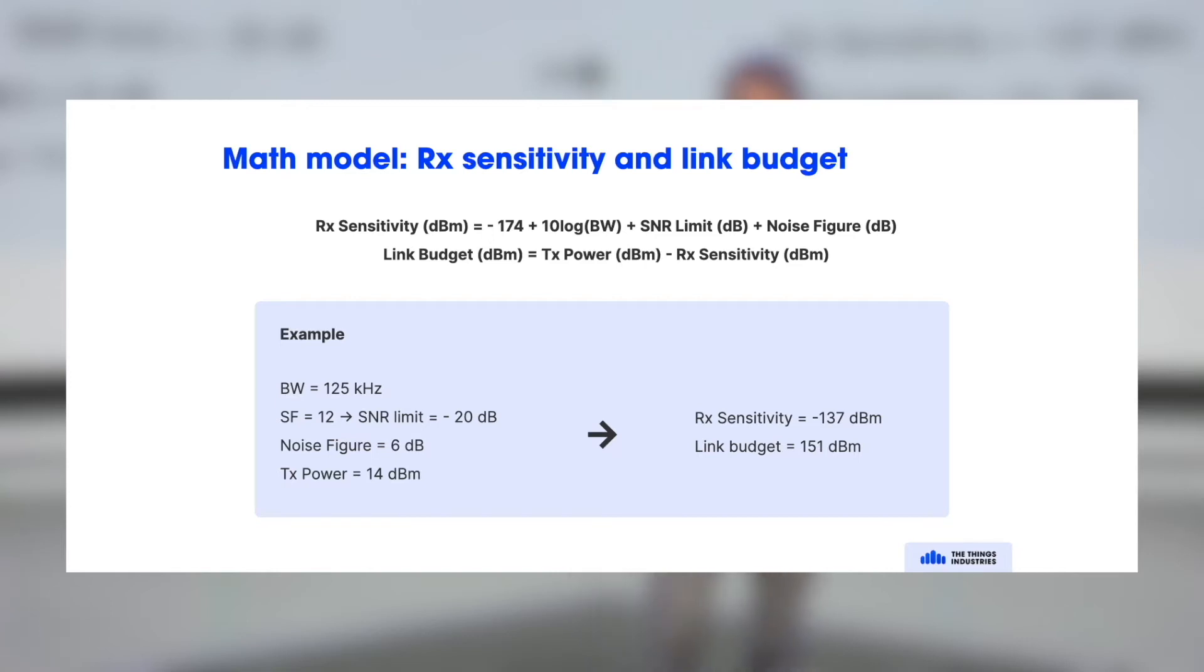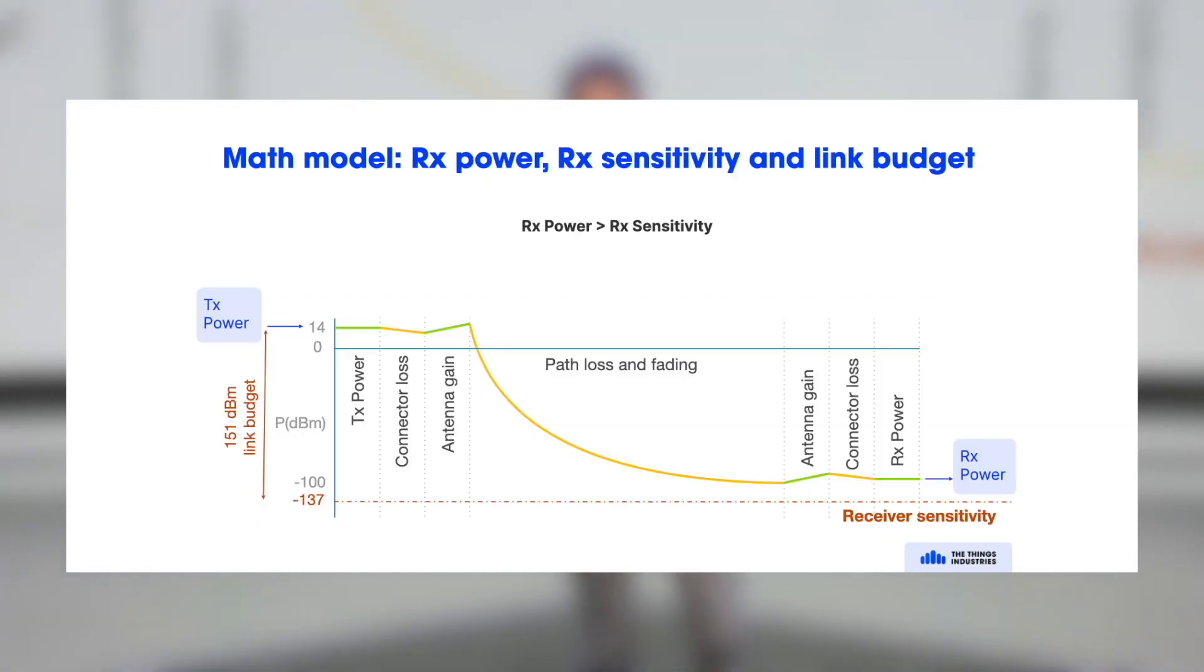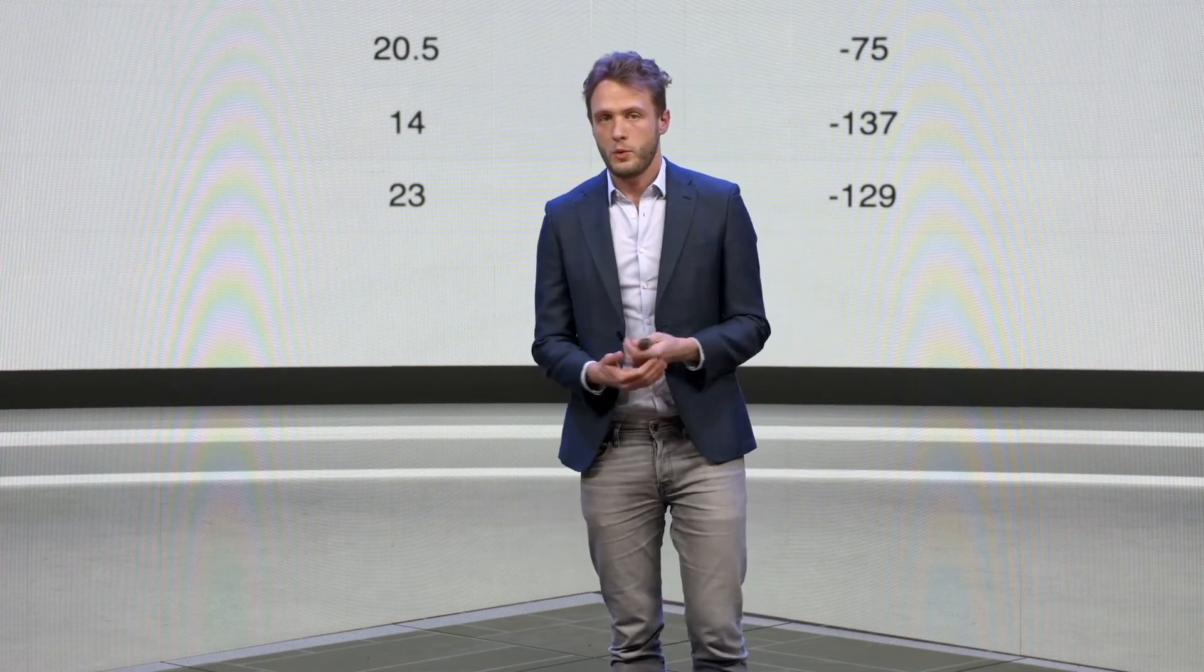And if you measure the difference between plus 14 dBm of the transmit power with the RX sensitivity of minus 137, you get a link budget of 151 dBm. So that is what you see here. You have the transmit power on the top left, that's 14. You have the receiver sensitivity of minus 137, and that gives you a link budget of 151 dBm. So what does that mean? What does 151 mean?